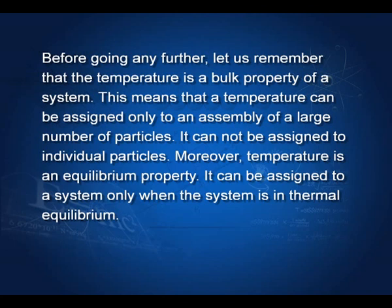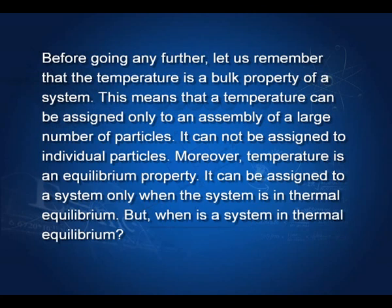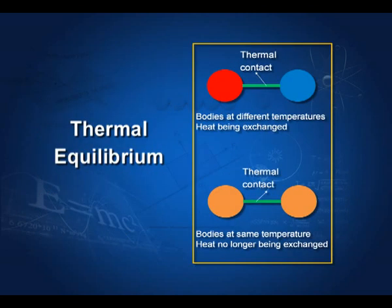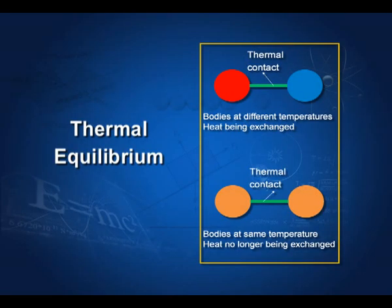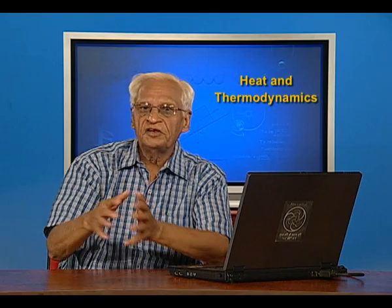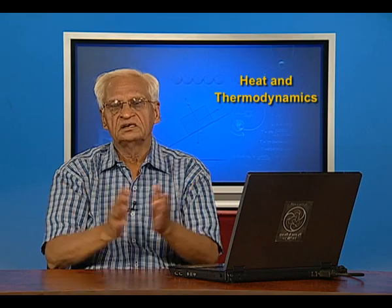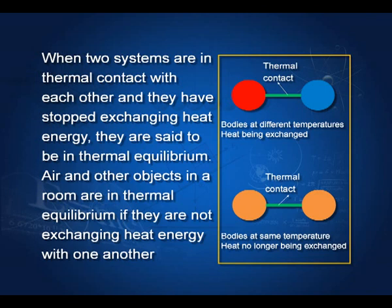When can the temperature be assigned? When bodies are in thermal equilibrium. What is thermal equilibrium? If I have two bodies — one at a higher temperature, one at a lower temperature — and I establish thermal contact between them, heat will flow from the body at higher temperature to the body at lower temperature. Ultimately the temperatures become equal, and we say these two bodies are in thermal equilibrium. If two bodies are not exchanging heat with one another, they are in thermal equilibrium.